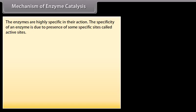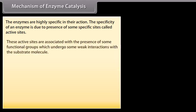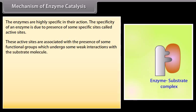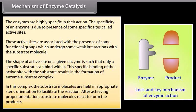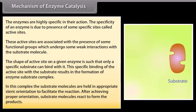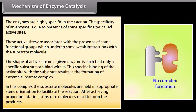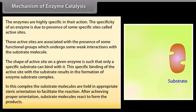Enzymes are highly specific in their action due to the presence of specific sites called active sites, which are associated with functional groups that undergo weak interactions with the substrate molecule. The shape of the active site is such that only a specific substrate can bind with it. This specific binding results in the formation of an enzyme-substrate complex, in which substrate molecules are held in appropriate steric orientation. After achieving proper orientation, substrate molecules react to form products, which then leave the surface so that fresh substrate molecules can bind with the active site.